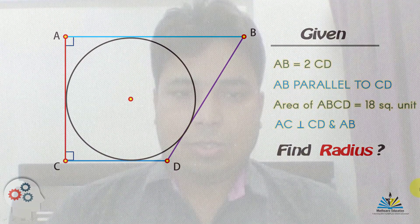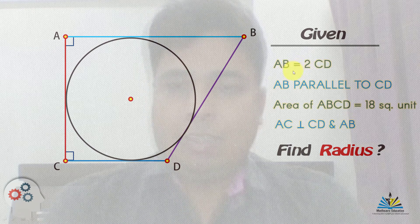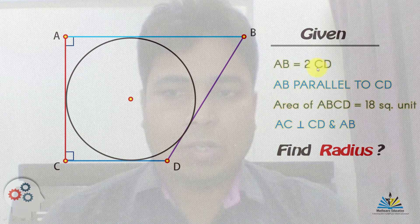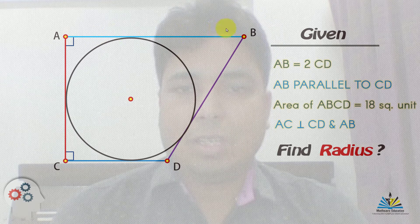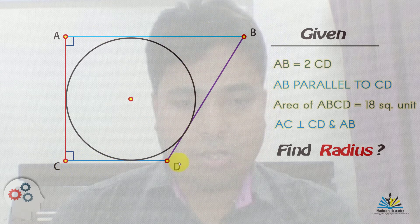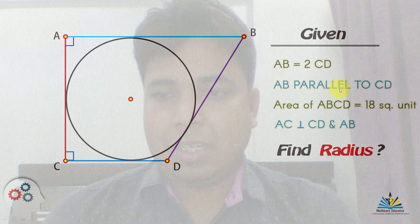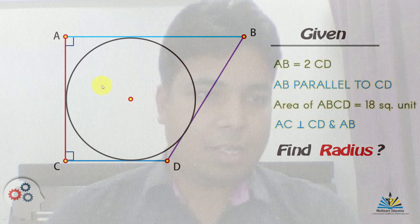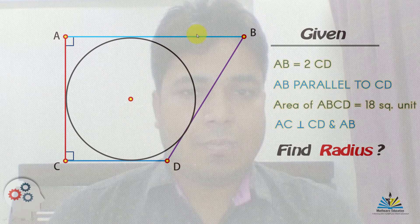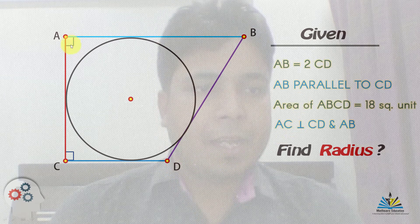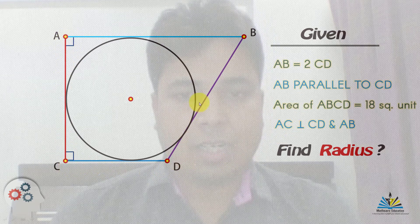Hello friends, myself Ramesh Chandra, and today we have a very good geometric problem for you. If you solve this problem on your own, you will know about the problem and its difficulty level. So let's start. It is given that AB is equal to 2CD — AB is equal to twice the length of CD — and AB is parallel to CD.